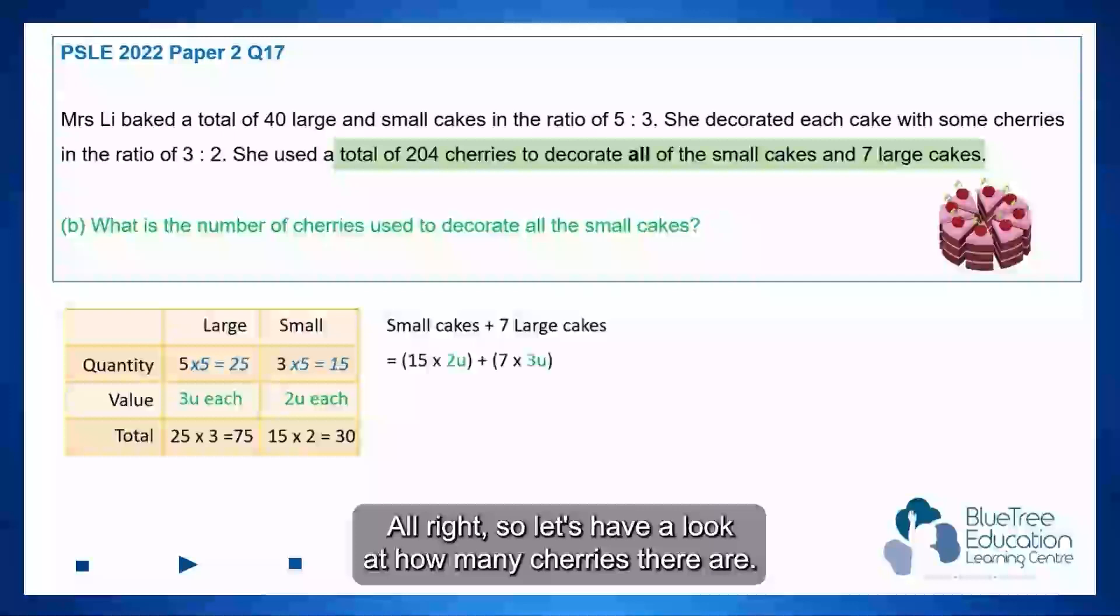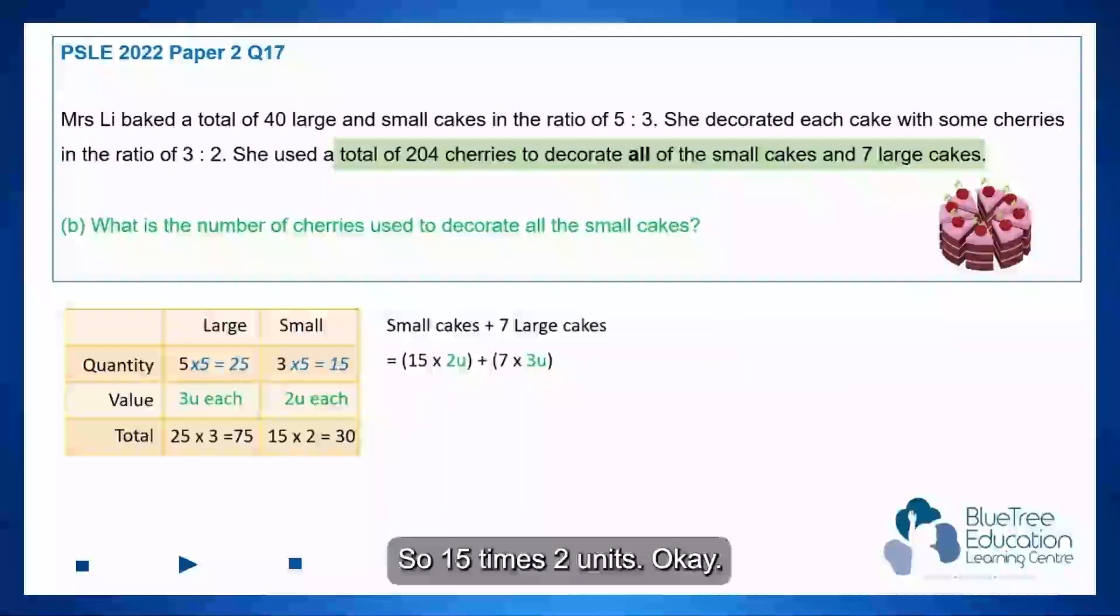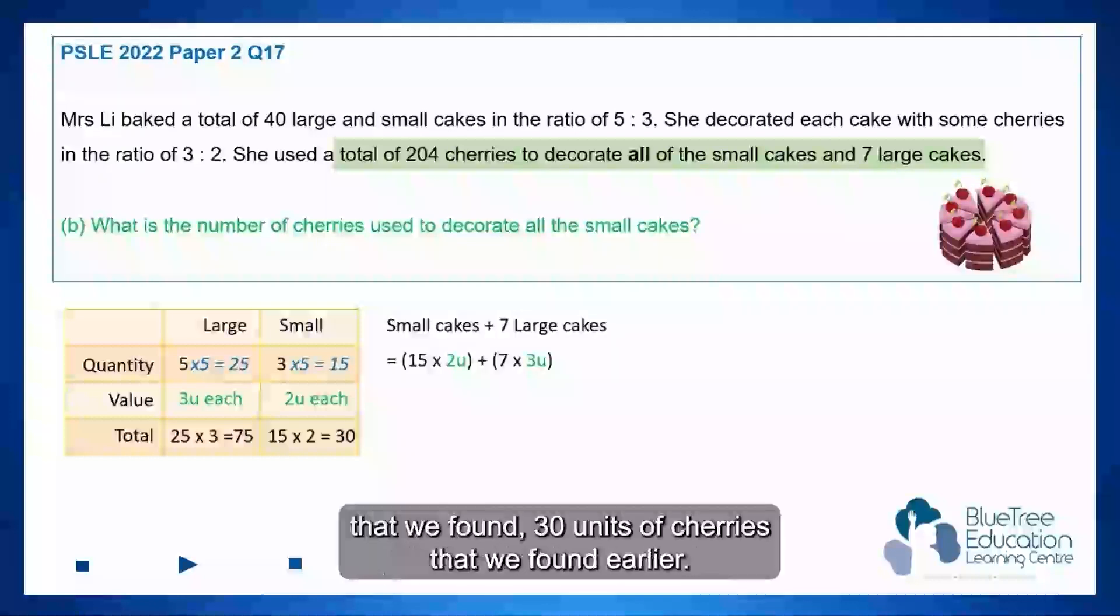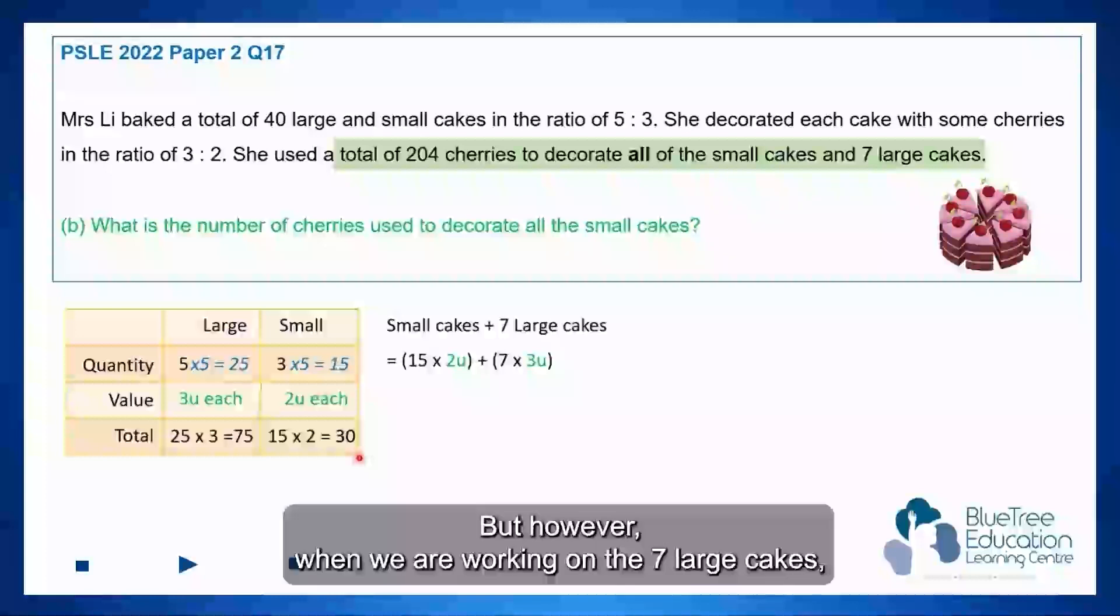So let's have a look at how many cherries there are. So 15 times 2 units, that will be the 30 cherries that we found, 30 units of cherries that we found earlier. But however, when we are working on the 7 large cakes, I realize I can't use this number anymore.